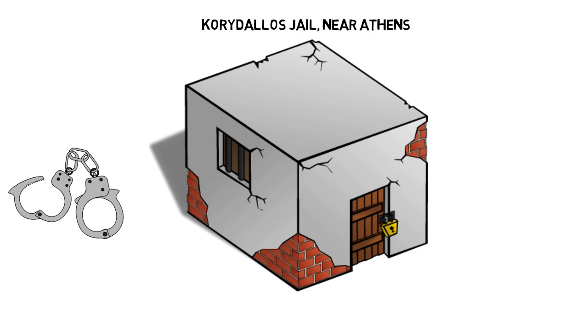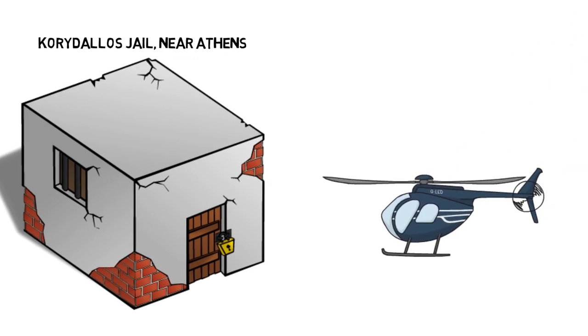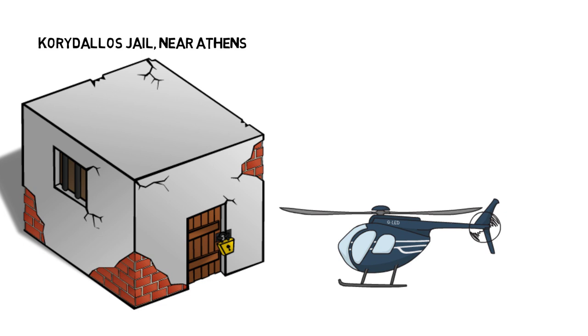Paliokostas was seven years into his 25-year sentence in 2006 when he was involved in a prison breakout. This time his brother was coming to help him. He and an accomplice hijacked a sightseeing helicopter and forced the pilot to fly to the prison at gunpoint. The guards thought the helicopter arriving was a visit from prison inspectors. By the time they realised it was a breakout, it was too late.